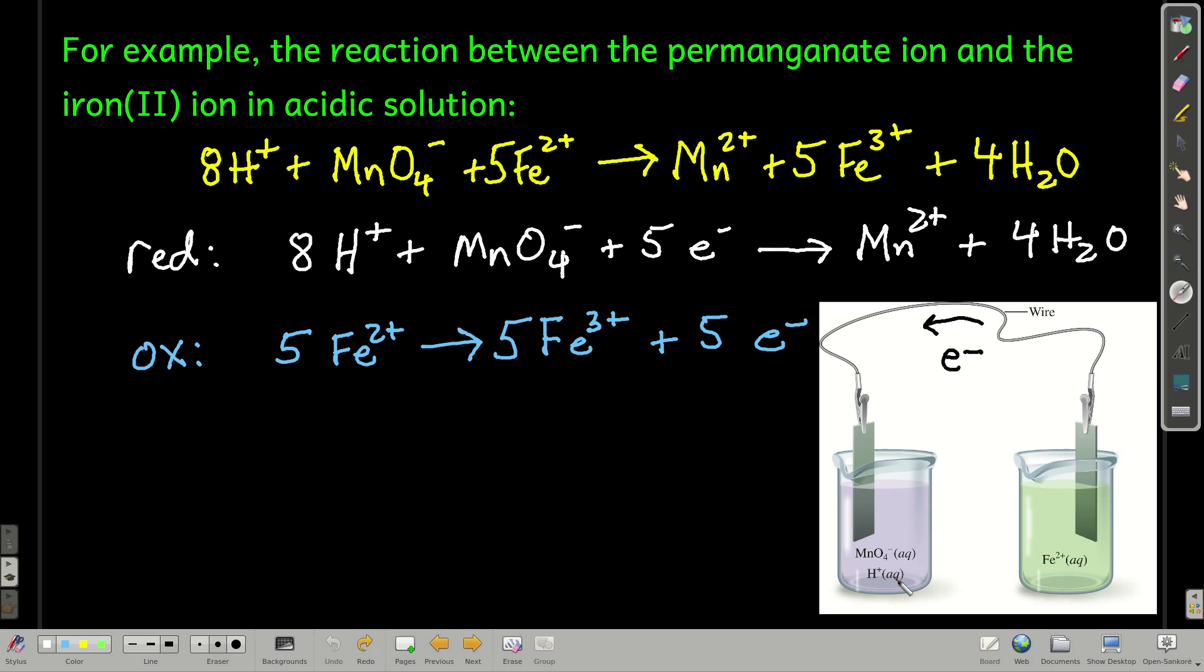Well, how does that happen? If you think about this, over here in this left-hand beaker, where the reduction is happening, before these five electrons flow, we have a total of seven positive charges, eight hydrogens and one permanganate.